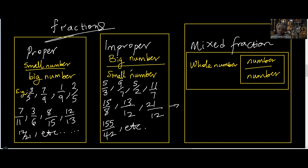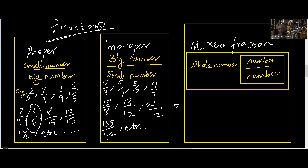But if you have a big number sitting on top of a small number, we say that is an improper fraction. So I have five over three, nine over seven, five over two, eleven over seven, fifteen over eight. I didn't use six over three because if I flip it, it's going to be a whole number — two.